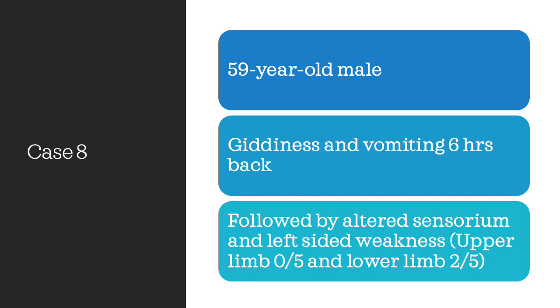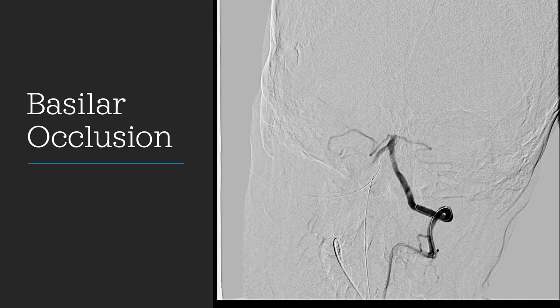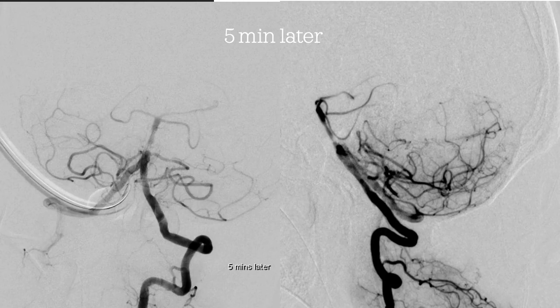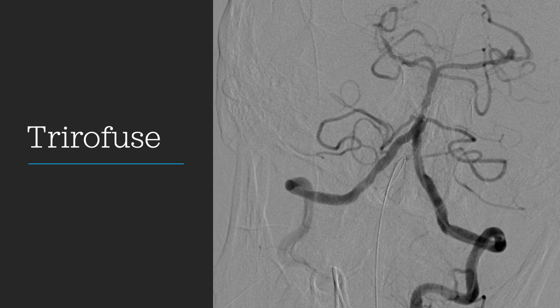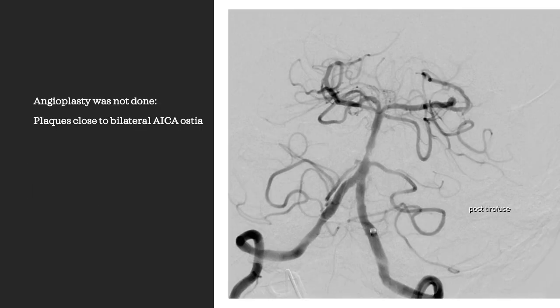Case 9: Patient presenting with giddiness and vomiting 6 months back, now with altered consciousness — acute stroke. Brainstem already showing ischemic changes, posterior basilar not seen. Angiogram shows total occlusion just distal to the ICCA. A modified SOLUMBRA technique was used — vessel opened but started shutting down again. Tirofiban was infused and the vessel stayed open. Key point: complication rates are much higher with dilatation or stenting at this level — perforators are numerous and snow-plowing can include the ICCA. The patient did well without stenting — if you can bail out, do so.